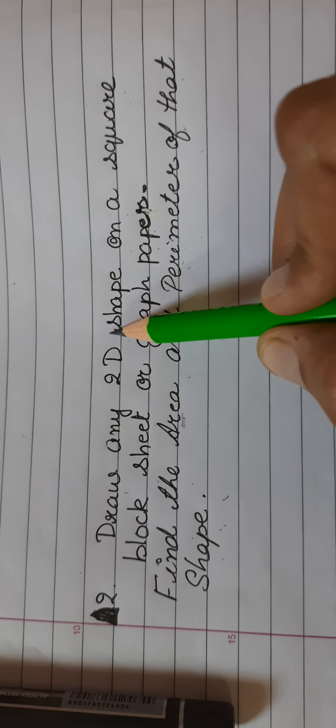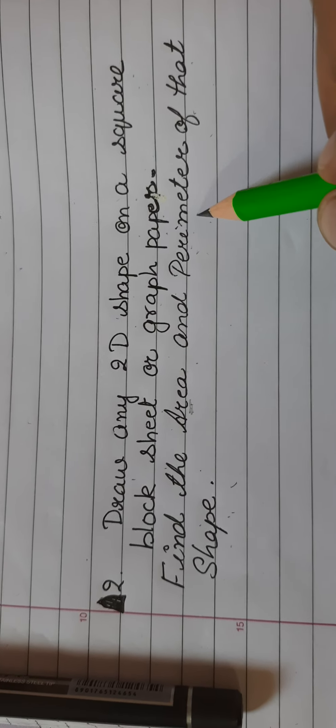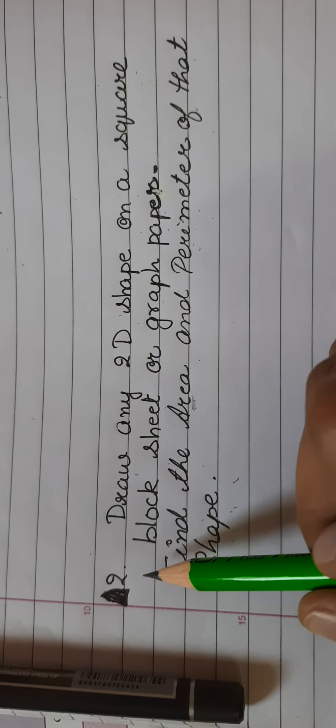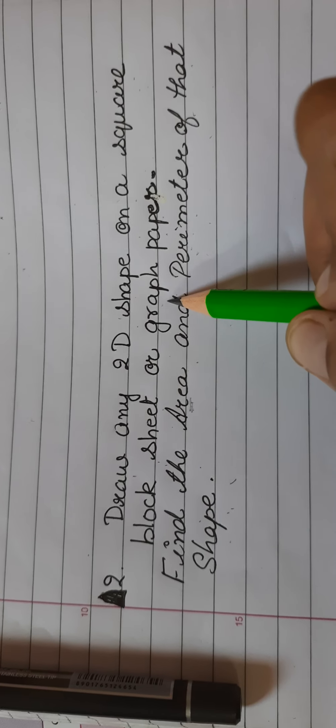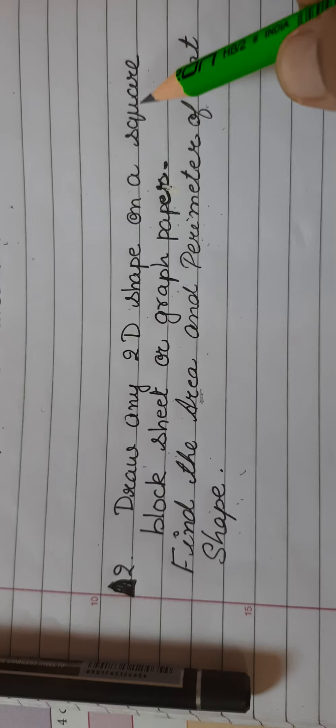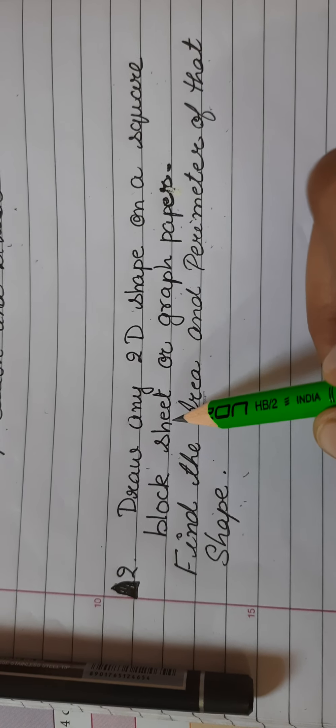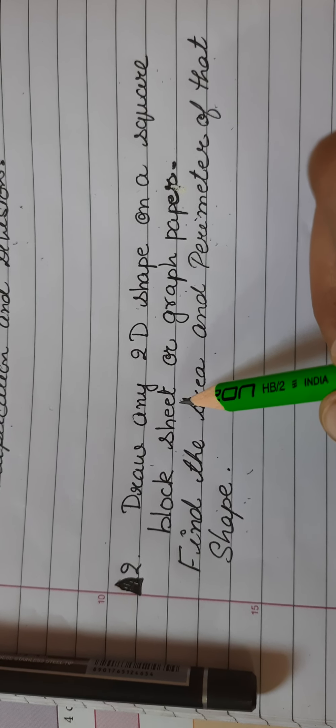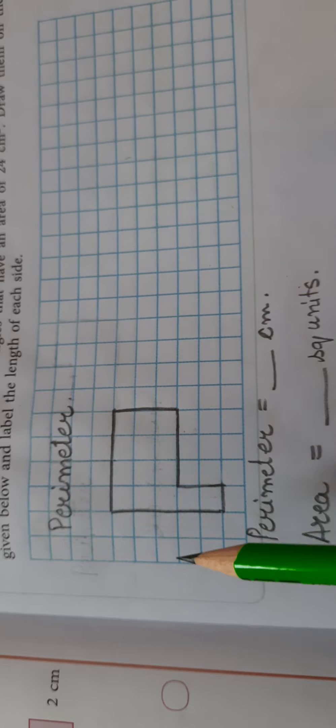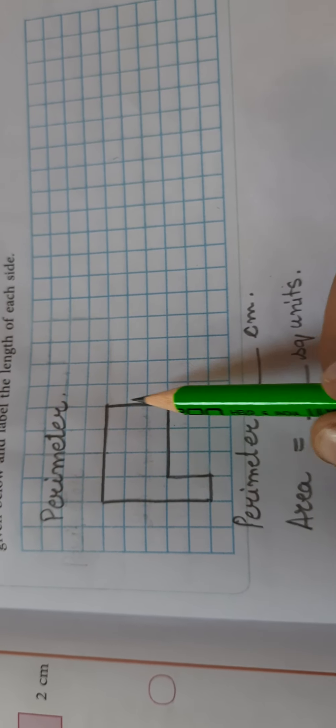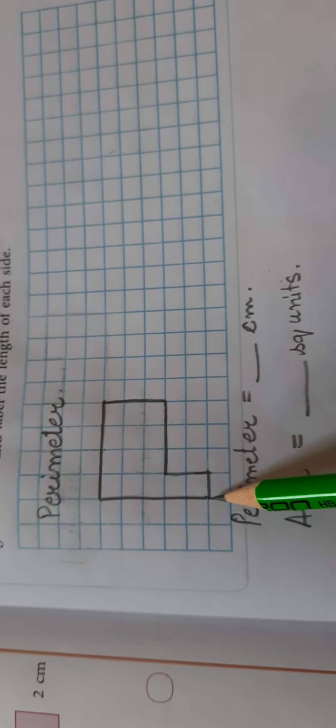Now how you are going to draw the 2D shape and how you will find area and perimeter by using the square block sheet or a graph paper? So I will tell you the same on a square block sheet that will be easily available at your home also.